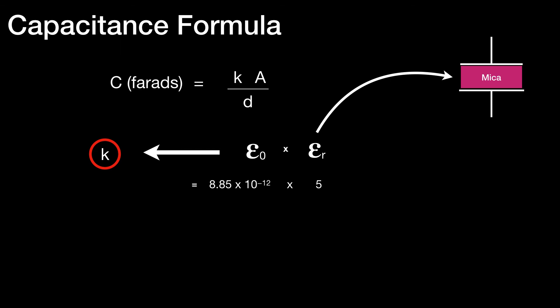So K in this formula would be 8.85 times 10 to the minus 12, that's epsilon 0, times 5. Or about 44.25 times 10 to the minus 12.